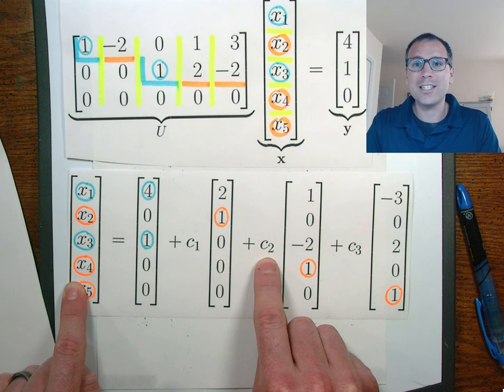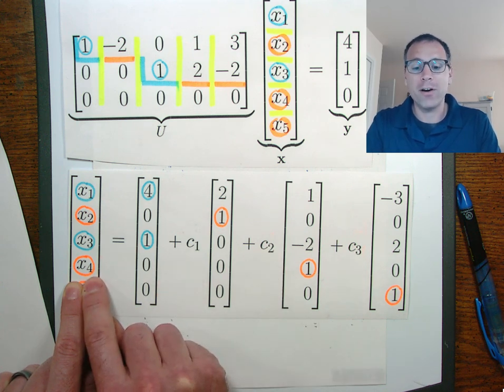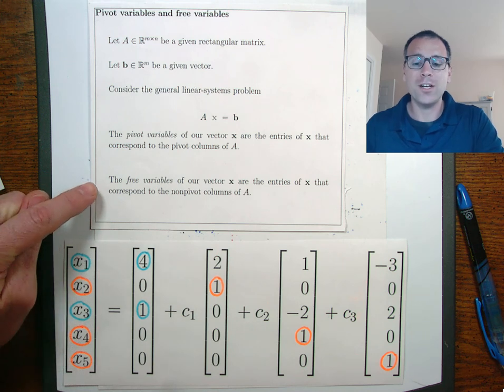We are free to choose what c2 is. In fact, x4 is a free variable. This leads us to the second half of our new definitions.